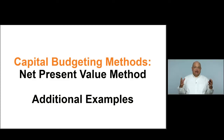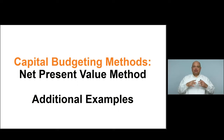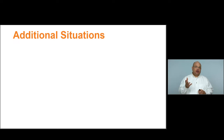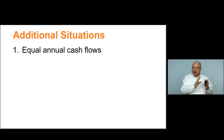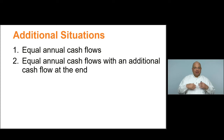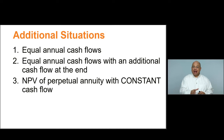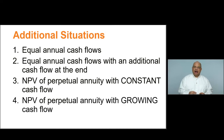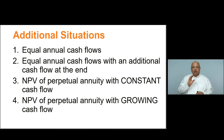We've looked at the standard example of calculating net present value with different cash flows. Now we're going to turn our attention to a few additional situations that are a little more involved. We're going to look at four situations: equal annual cash flows, equal annual cash flows with an additional cash flow at the end, the net present value of a perpetual annuity with constant cash flow, and a perpetual annuity with a growing cash flow — an income coming in forever, in perpetuity.